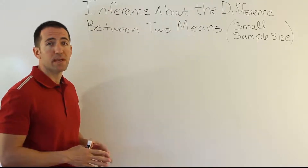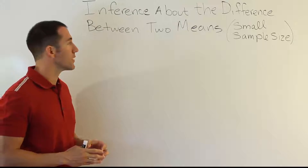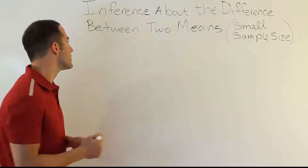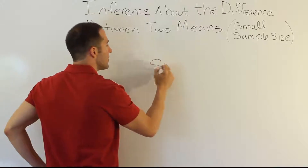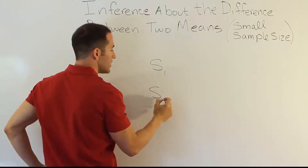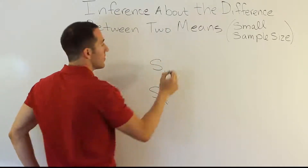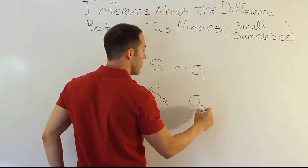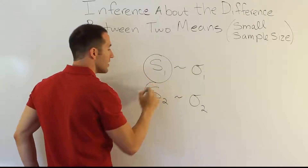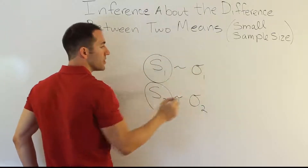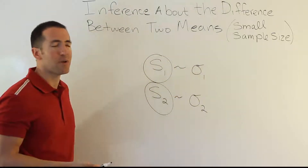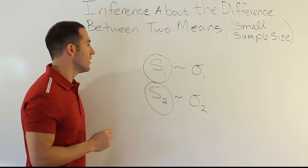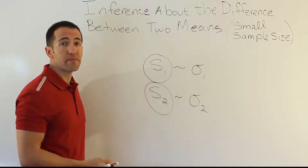When the sample sizes are small, we can't necessarily safely assume that. It turns out that's not quite as important as the next issue, which is that the sample standard deviations we use as estimates of their population counterparts — sigma 1 and sigma 2 — are not as good as estimators of their population counterparts when the sample size is small. So in order to compensate for that weakness, we use the t-distribution.